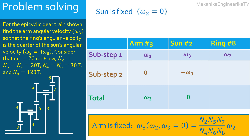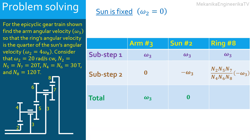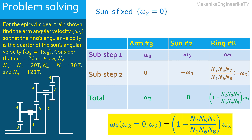In the second sub-step, the angular velocity ω₂ is equal to −ω₃. Hence, ω₈ = (N₂·N₅·N₇)/(N₄·N₆·N₈) times (−ω₃). To have the angular velocity of the ring when the sun is fixed, we combine the results of the two sub-steps. The sum of the two sub-steps gives: ω₈ (sun 2 fixed) = [1 − (N₂·N₅·N₇)/(N₄·N₆·N₈)] · ω₃.